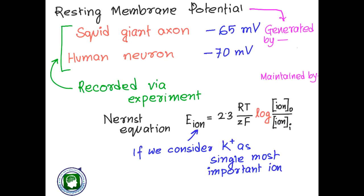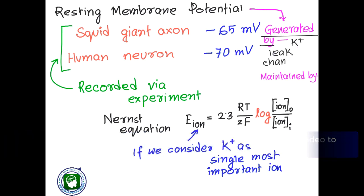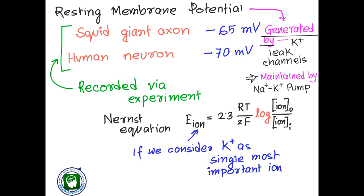Till now we have learnt that resting membrane potential is mainly generated due to freely permeable potassium ions. The potassium leak channels were responsible for it. Due to these channels, potassium came out of the neuron and formed a positive environment outside and a negative environment inside. But to maintain that resting membrane potential, potassium leakage is not enough. For that, we have the sodium-potassium ATPase pump, which is responsible for the maintenance of resting membrane potential.